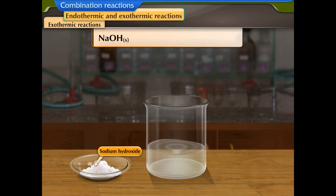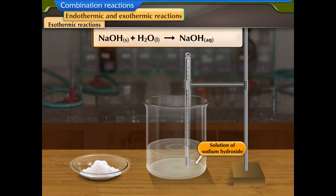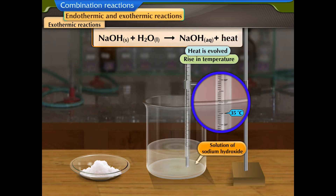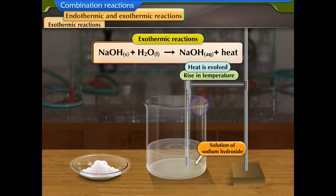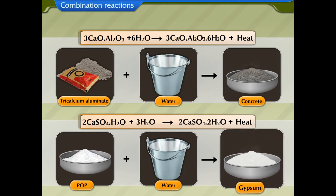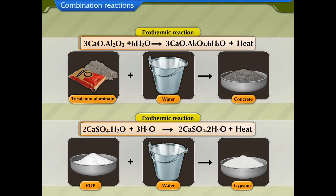Exothermic reactions: in this reaction, heat is evolved, hence there is a rise in temperature. Reactions in which heat is evolved are called exothermic reactions. Formation of concrete and the manufacture of gypsum, which we discussed earlier, are both exothermic reactions as they involve liberation of heat.